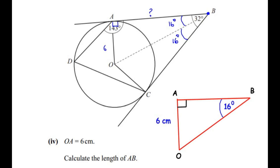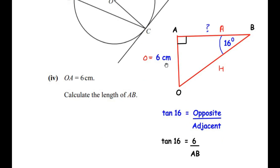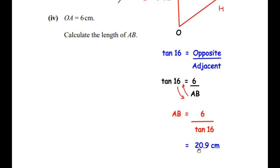Let me redraw triangle OAB for easy reference. OA is given as 6 centimeters, angle ABO is 16 degrees, and angle OAB is 90 degrees. To find the length AB, we use trigonometric ratios. With 16 degrees as the angle of concern, OA is the opposite side and AB is the adjacent side. Since hypotenuse is not given and adjacent is needed, we use the tan ratio: tan(16°) equals opposite over adjacent, so tan(16°) equals 6 over AB. Therefore AB equals 6 over tan(16°), which gives us 20.9 centimeters.